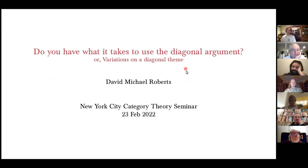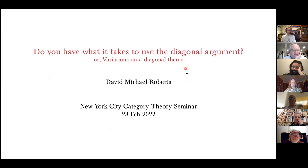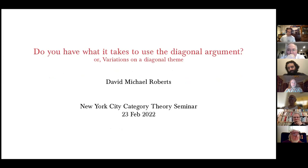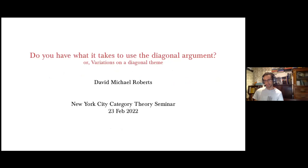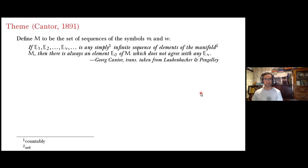This talk is based on a paper which is on the arXiv, recently accepted to Compositionality. It's kind of an odd paper, because it's taking a result and pushing it in different directions — not so much finding an ultimate answer but exploring where that result can go. That's why I called it 'Variations on a Diagonal Theme.' Hopefully if people see anything they like, we can talk about one of those in a bit more detail.